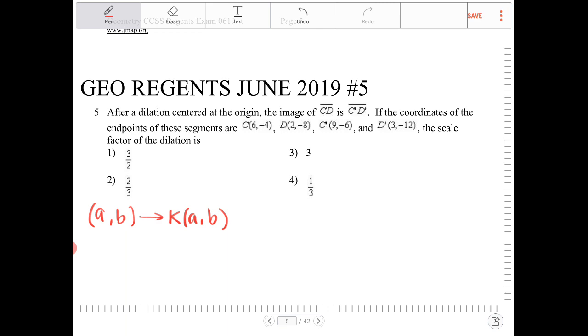So all we got to do is we got to take C prime and C and see what the factor is. So if we're going from C which is 6 comma negative 4 and then we're going to C prime which is 9 comma negative 6,